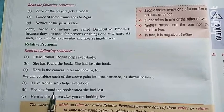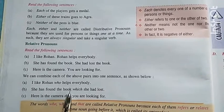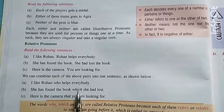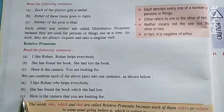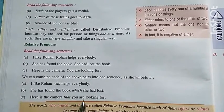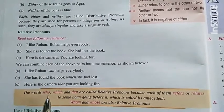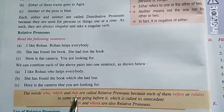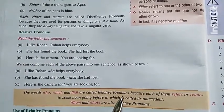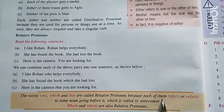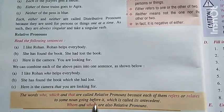B: She has found the book which she had lost. She has found the book — उसे book प्राप्त हो चुकी है — which she had lost — जो खो गई थी. C: Here is the camera that you are looking for. The words who, which, and that are called relative pronouns. यह जो words दिये गए हैं, यह relative pronouns हैं, because each of them refers and relates to some noun going before it.